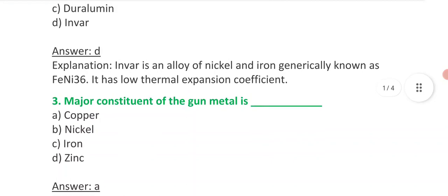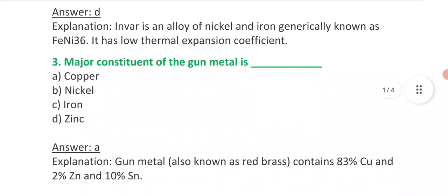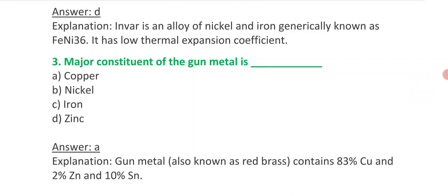Answer is A, copper. Copper is the major constituent of the gun metal. And it contains 83% copper, 2% zinc, and 10% tin. And also known as red brass, due to its red color.